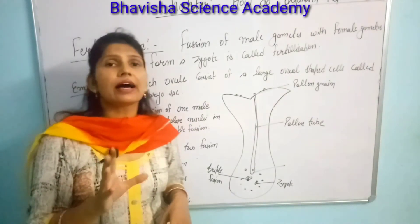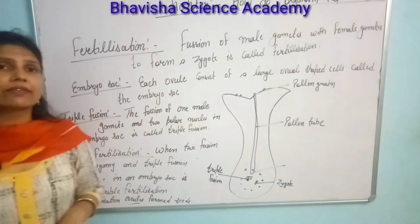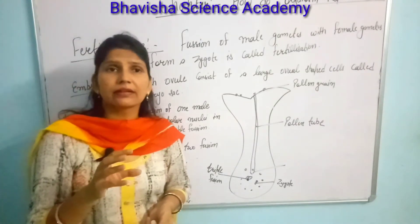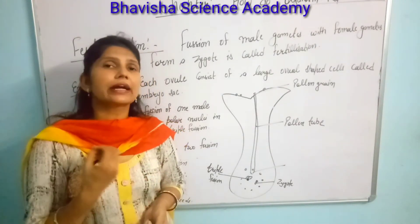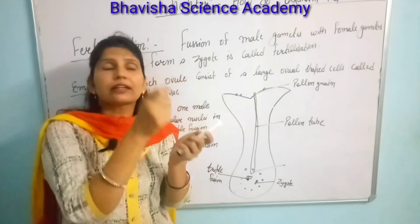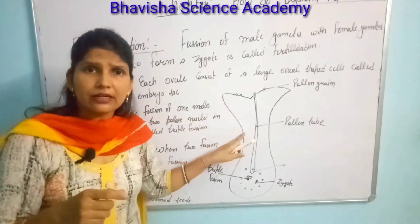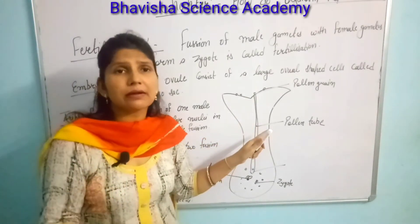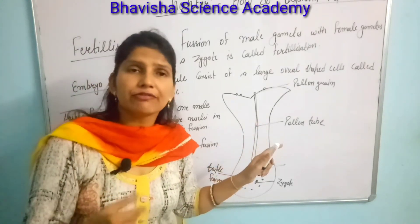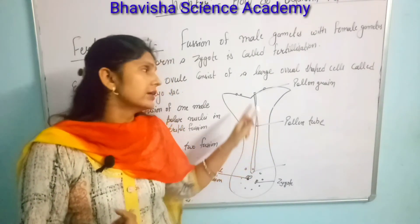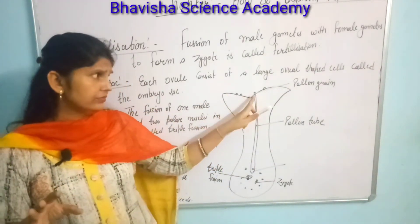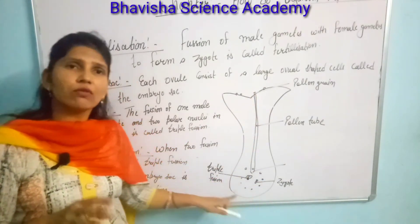To recap: the flower is the reproductive part of a plant. Its colorful leaves are known as petals, and a group of petals is known as the corolla. The green leaves at the base are the sepals, and a group of sepals is known as the calyx. Below the calyx, the base of the flower is called the receptacle. At the center are the female gamete — the carpel (also called pistil) — and the male gamete — the stamen. The female part has three parts: stigma, style, and ovary. The ovary contains ovules.